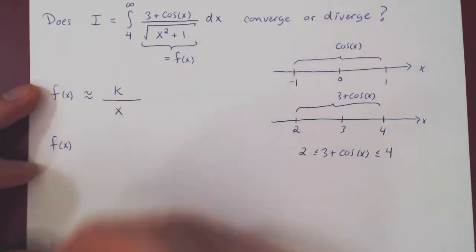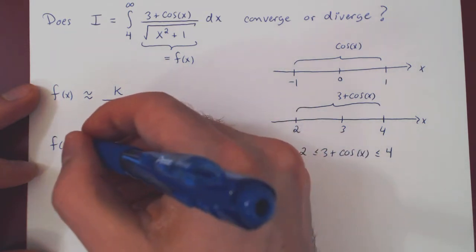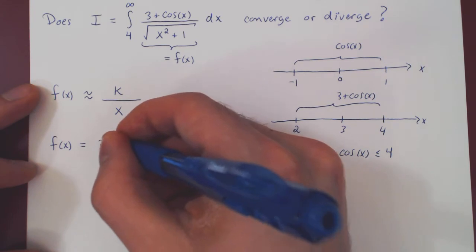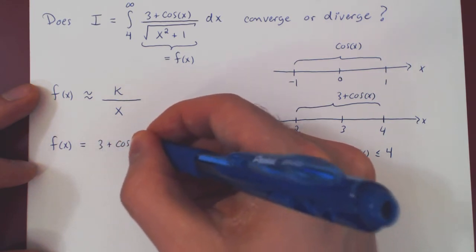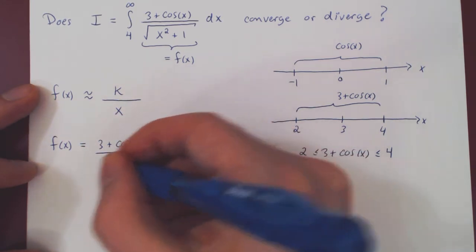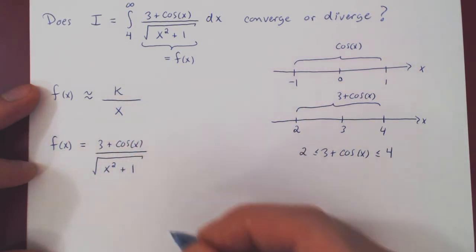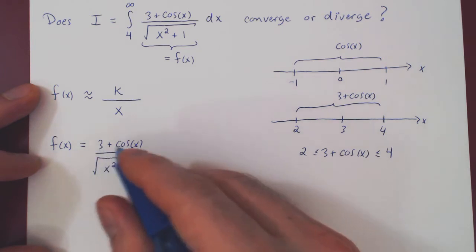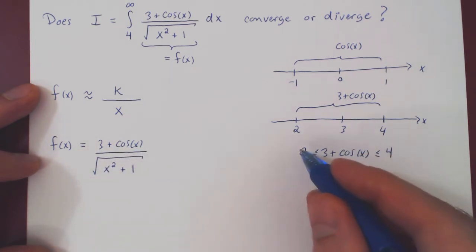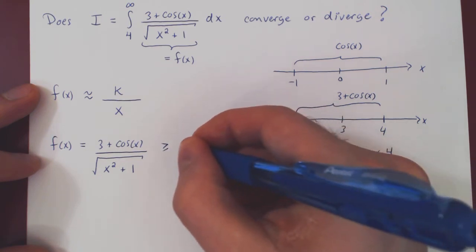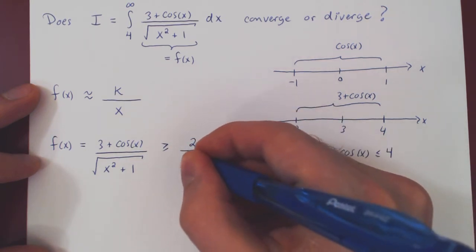So let's see then. Our f(x), which is equal to, again, (3 + cos(x))/√(x² + 1). Well, 3 + cos is always at least as big as 2, and we keep the same denominator.